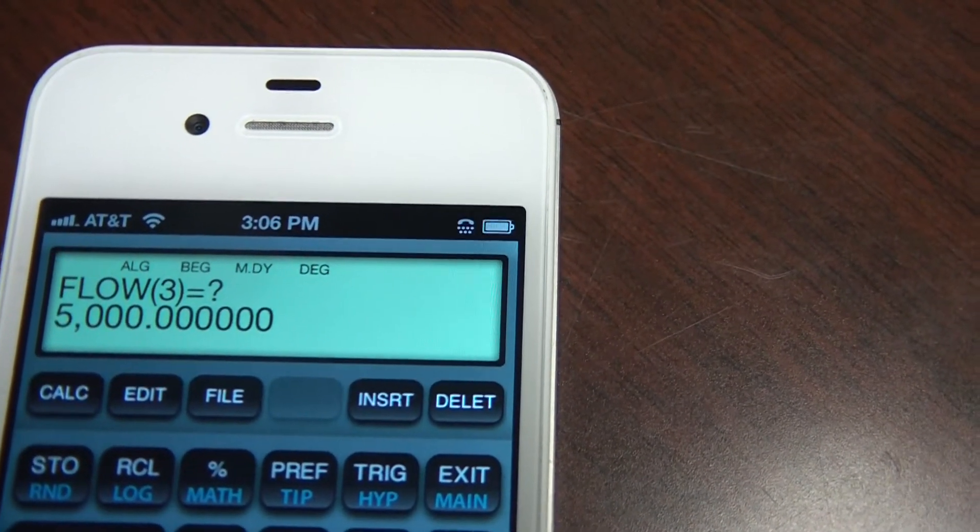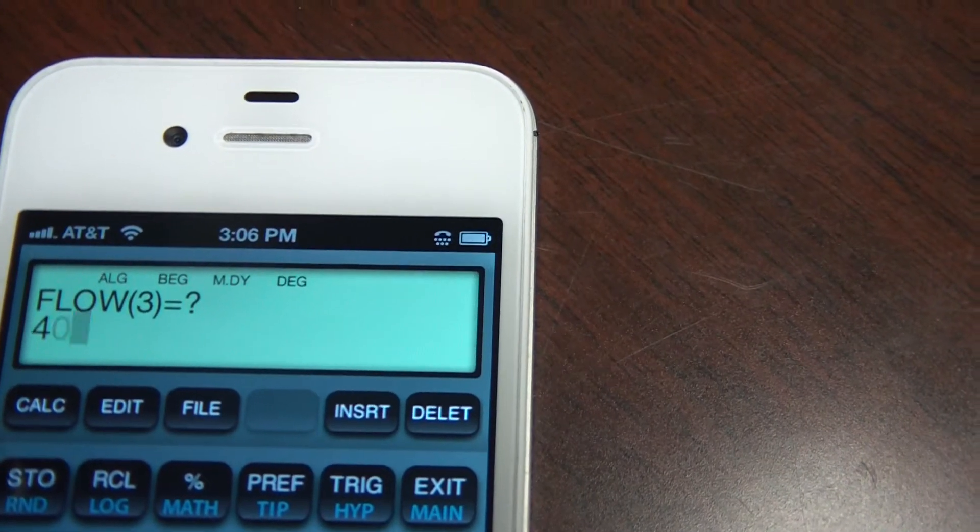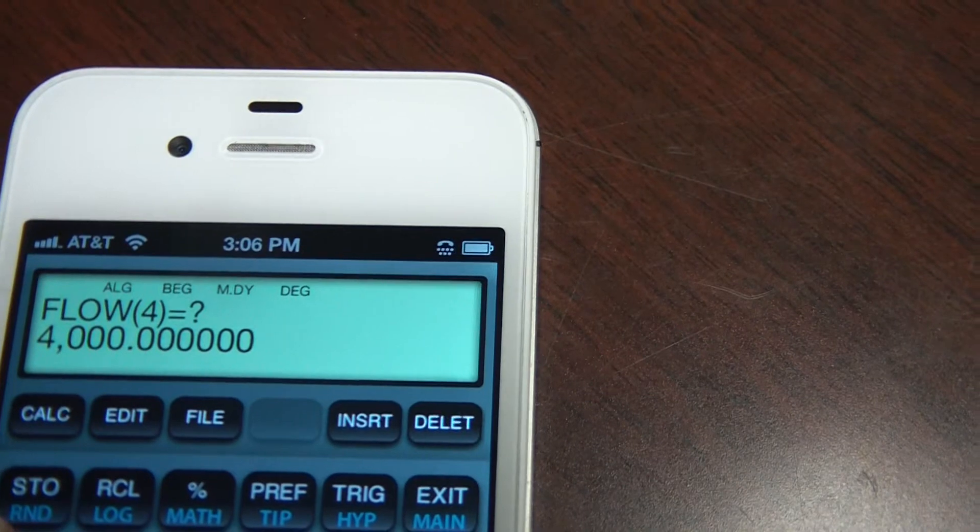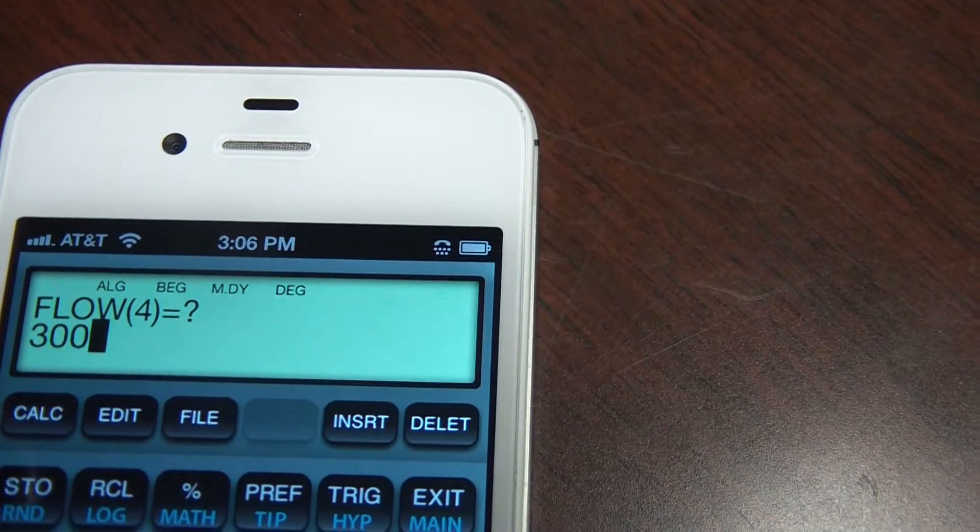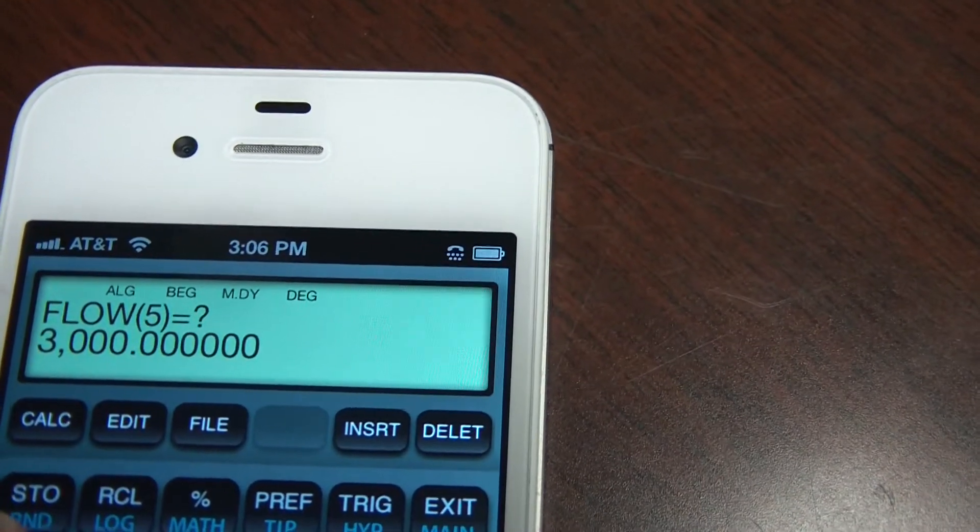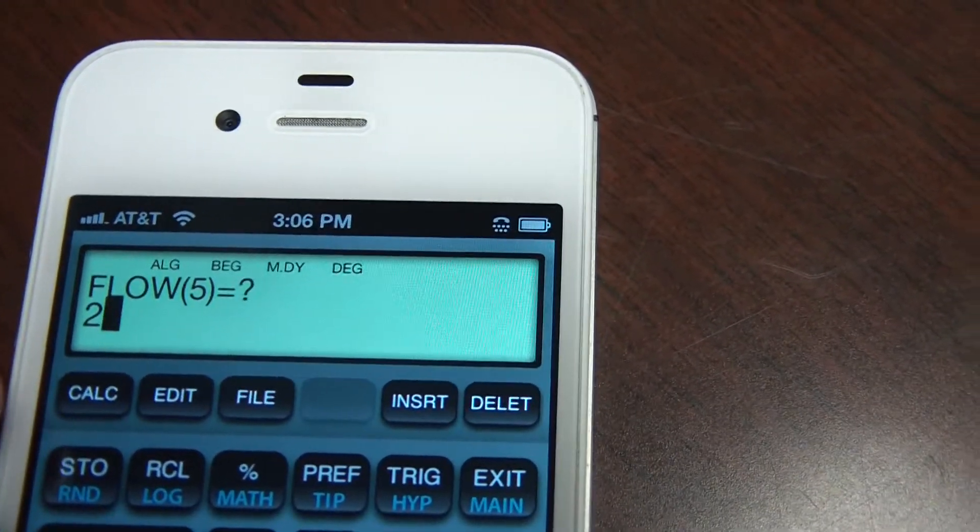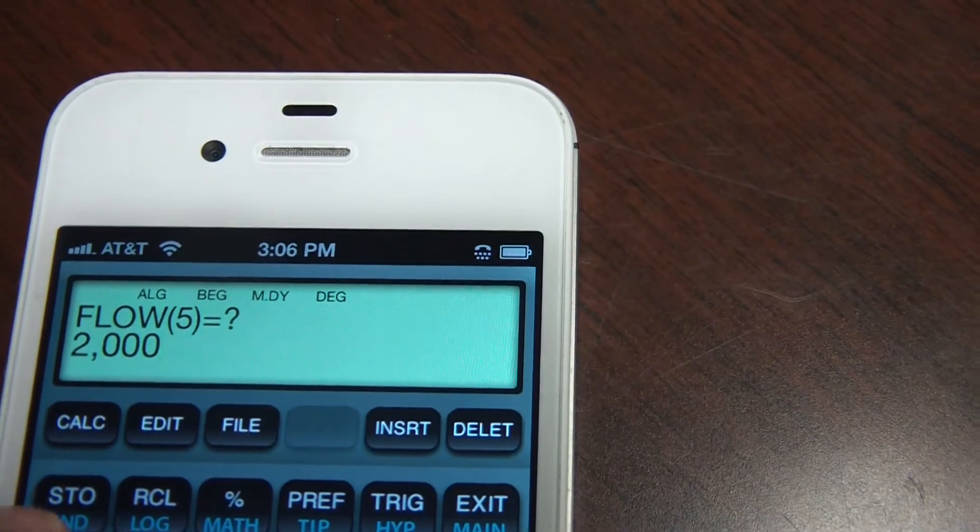Cash flow for year three is $4,000. Input. Cash flow for year four is $3,000 coming in, positive. Input. Cash flow for year five is $2,000, positive value coming in. Input.